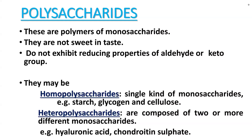The next topic is polysaccharides. The word 'poly' means many, so polysaccharides are polymers of many monosaccharides. In polysaccharides, you can have thousands — like 20,000, 30,000, even 1 million monosaccharides joined together through glycosidic bonds.